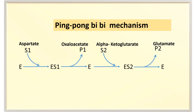The exact mechanism is a ping-pong bi-bi mechanism, where the substrates do not enter at the same time. The first substrate enters and combines with the enzyme to form an enzyme-substrate complex, with release of oxaloacetate. Then the enzyme is released and the second substrate, alpha-ketoglutarate, enters, forming another enzyme-substrate complex and releasing glutamate. This is how the amino group transfers from aspartate to alpha-ketoglutarate.